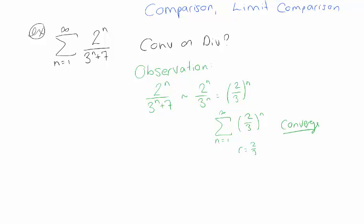Notice that what we have here — 2^n over (3^n + 7) — is actually less than the geometric series. Our geometric series 2/3 to the n, when we sum all these terms, gives a finite amount of area. And our original series is even smaller, so the area underneath this original series curve is even smaller. If there's a finite amount of area under the green curve, there's got to be a finite amount of area under the black curve — and that's exactly the comparison test.